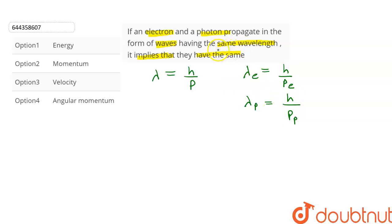It is given that they have the same wavelength, so let's equate these equations. This will give us lambda e equals lambda p. So we get h upon the momentum of electron equals h upon the momentum of photon. H gets cancelled, and after simplifying we get momentum of electron equals the momentum of photon.